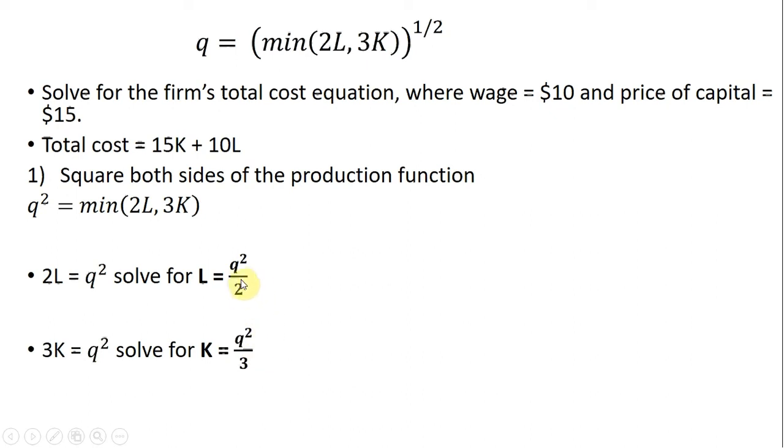The next step is to take this L and K and substitute them into our total cost equation. So for L, we plug in Q squared divided by 2. And for K, we plug in Q squared divided by 3, which I do right here.